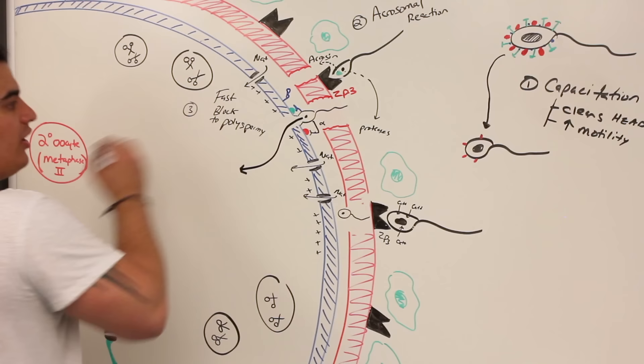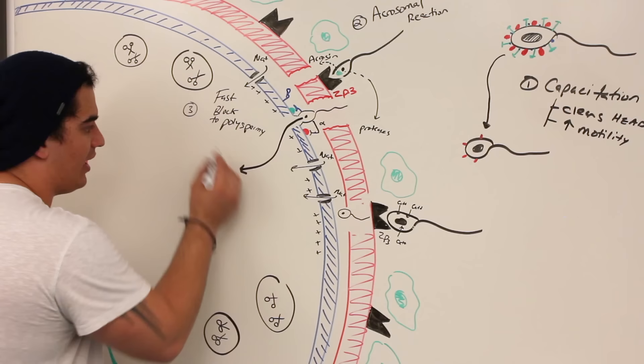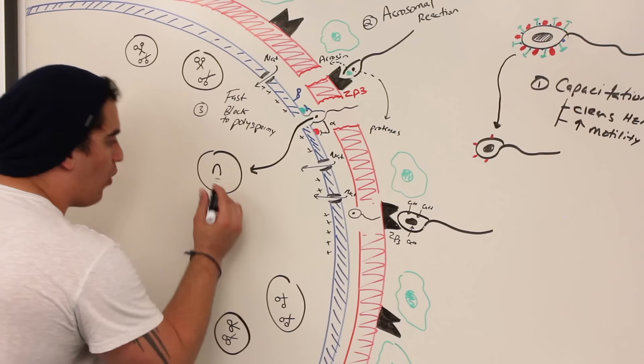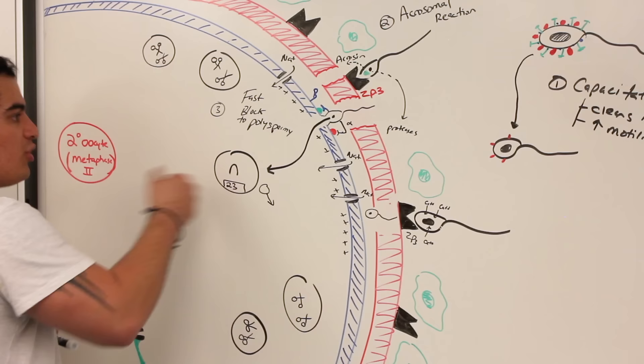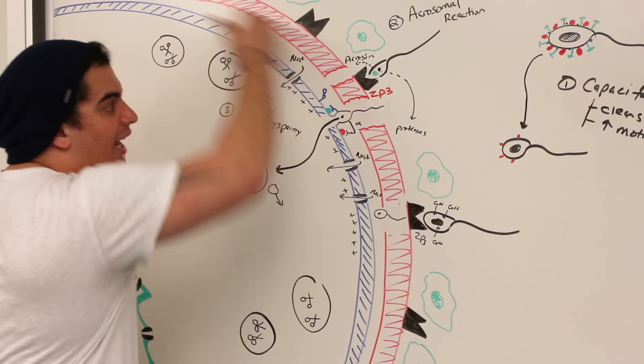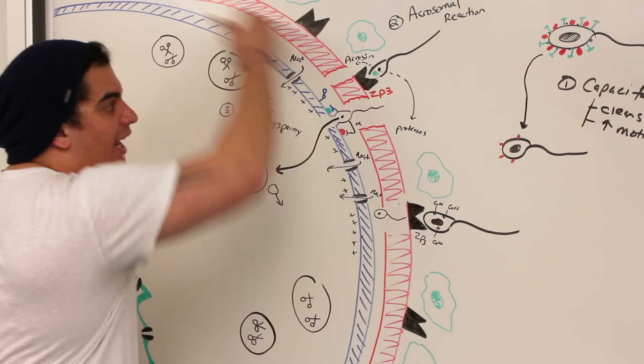Once the membranes fuse, the sperm releases its nuclear material — the haploid male pronucleus with 23 chromosomes — out into the oocyte cytoplasm. But one more thing has to happen, because we don't want any other sperm cells getting in at all, so we need one more block.